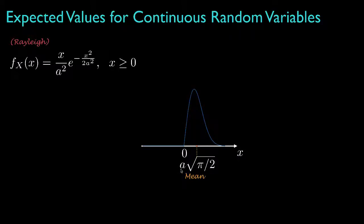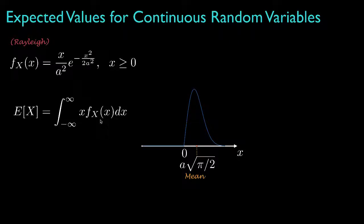Another way is to specify the mean or the expected value for the random variable, which is evaluated by integrating the product of the probability density with all of the values in its range. For the Rayleigh density, the mean is roughly 1.25 times the parameter A. As we've seen, the mean, the median, and the mode are all different values for this particular density function.